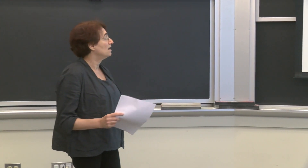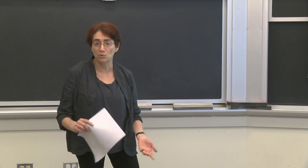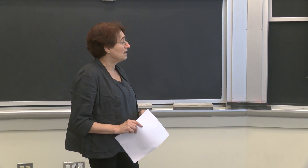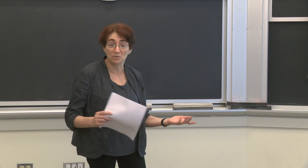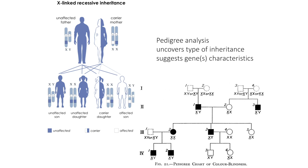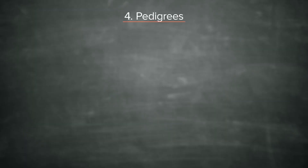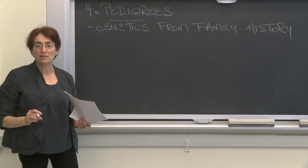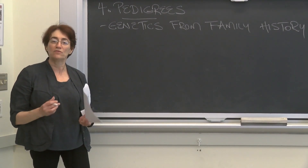Geneticists and doctors use pedigrees to understand the likelihood that you'll come down with a particular disorder, perhaps Alzheimer's or some kind of cancer. They can help understand things like coat color or disease in dogs as well, which are complicated just as in humans. We're going to spend time talking about pedigrees and how one uses them to understand something about the genetics of a particular trait. We can define pedigrees as genetics from a family history, and because it's from a family history, we have to be able to write down notations of what the family history looks like.